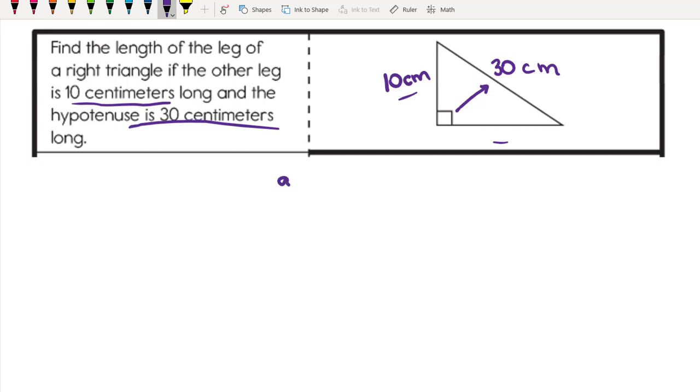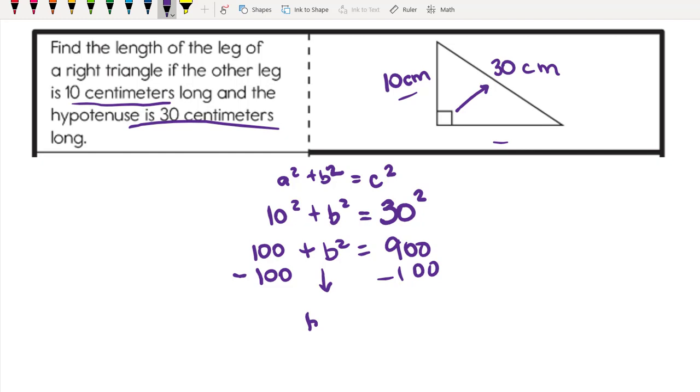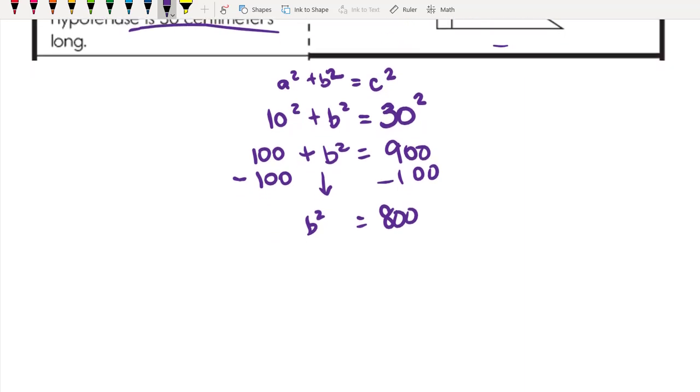We start with the Pythagorean theorem: a squared plus b squared equals c squared. 10 is one of the legs, we do not know the other leg, and 30 is our hypotenuse. We square all of that: 10 squared is 100, 30 squared is 900. Next, I'm going to isolate my variable by subtracting 100. This leaves me with b squared equals 800.